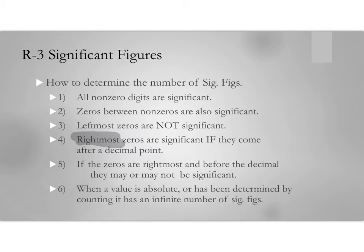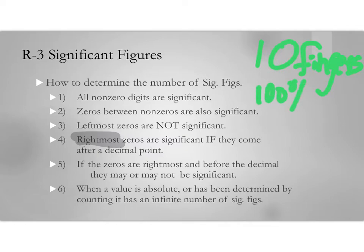The last rule: when a value is absolute or determined by counting, it has an infinite number of significant figures. If I ask you to count the number of fingers on your hand, assuming no accidents or birth defects, you have five fingers on each hand for a total of 10. There's no uncertainty about that — you either have 10 or you don't. That number, 10 fingers, is 100% certain, and therefore has infinitely many significant figures.